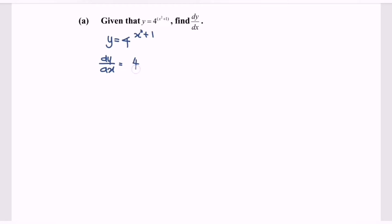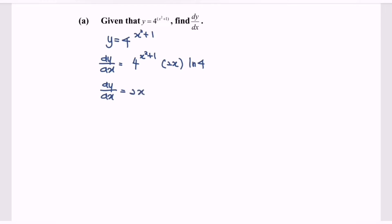What we have to do is copy the base. Then focus on the power, which is x squared plus 1. Differentiate the power and we get 2x. Do remember to add on ln(4). So dy/dx equals 2x multiplied by 4 to the power of x squared plus 1, multiplied by ln(4).